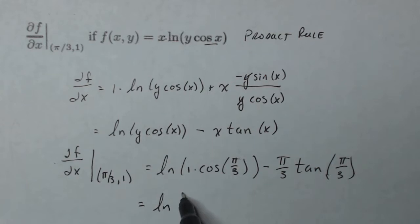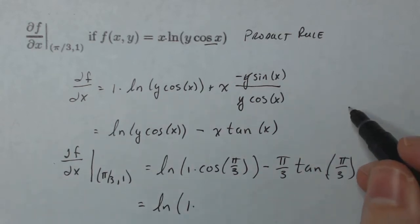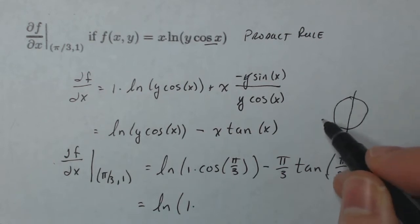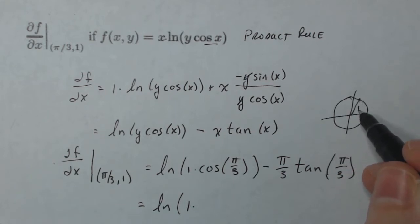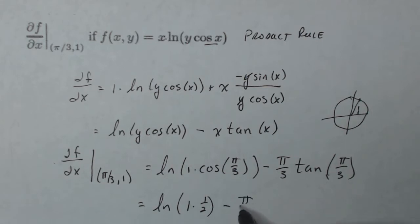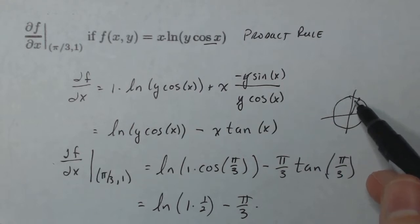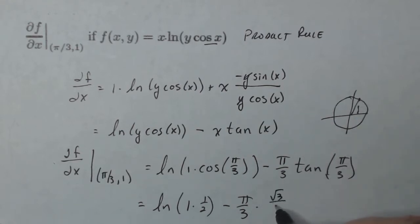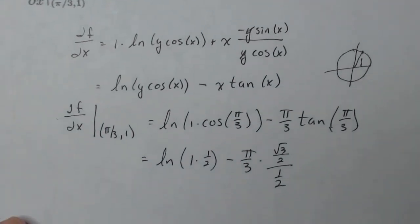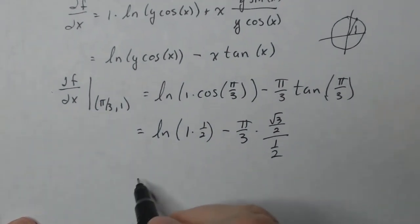This is gonna be the natural log of one times, well, cosine of pi over three. If I think about that, pi over three is somewhere up here. So cosine is gonna be one half minus pi over three. Well, tangent is sine over cosine. So at this point, sine is gonna be square root of three over two and cosine's one half. So I'm just gonna simplify those numbers a little bit and then I should be done.